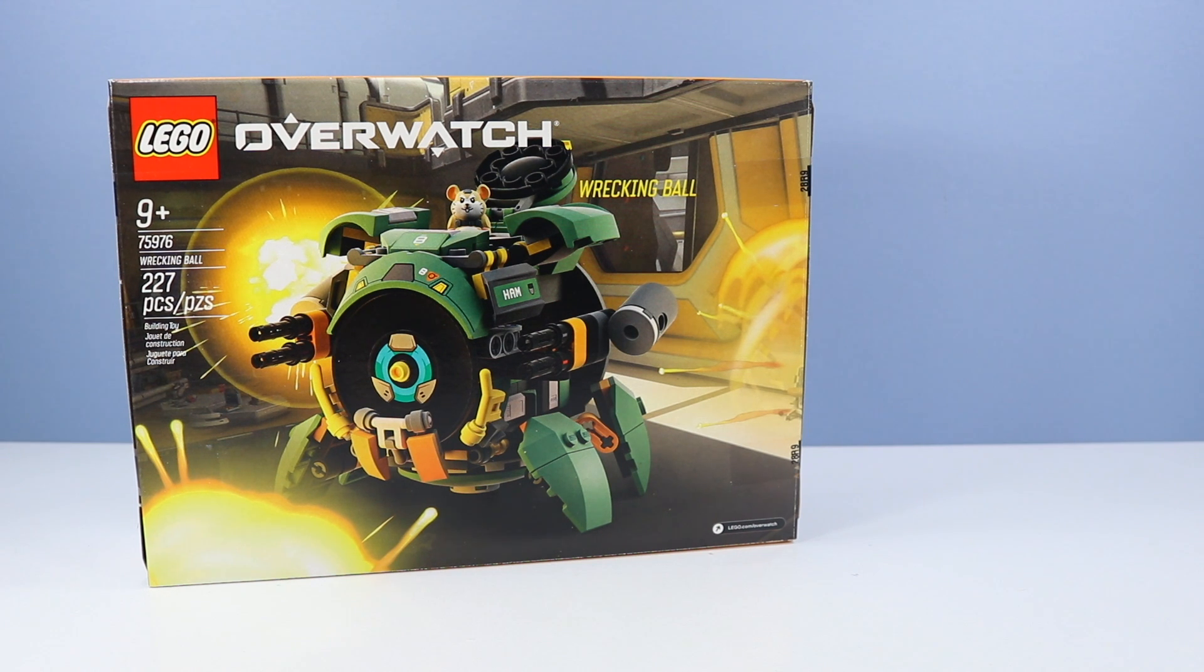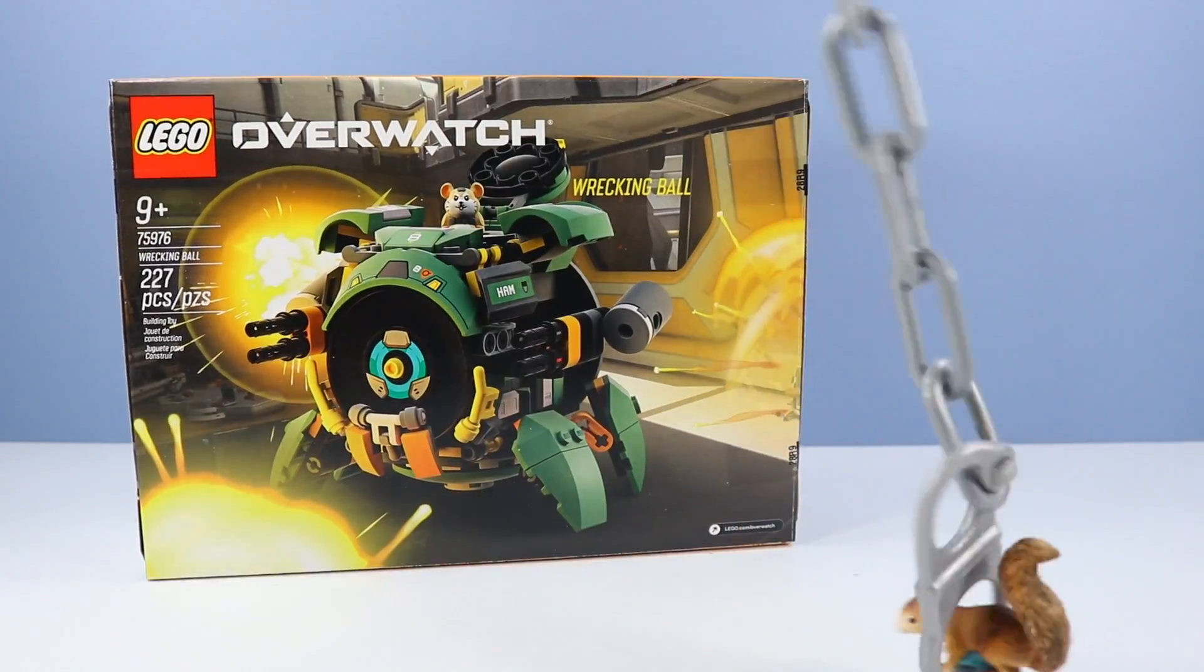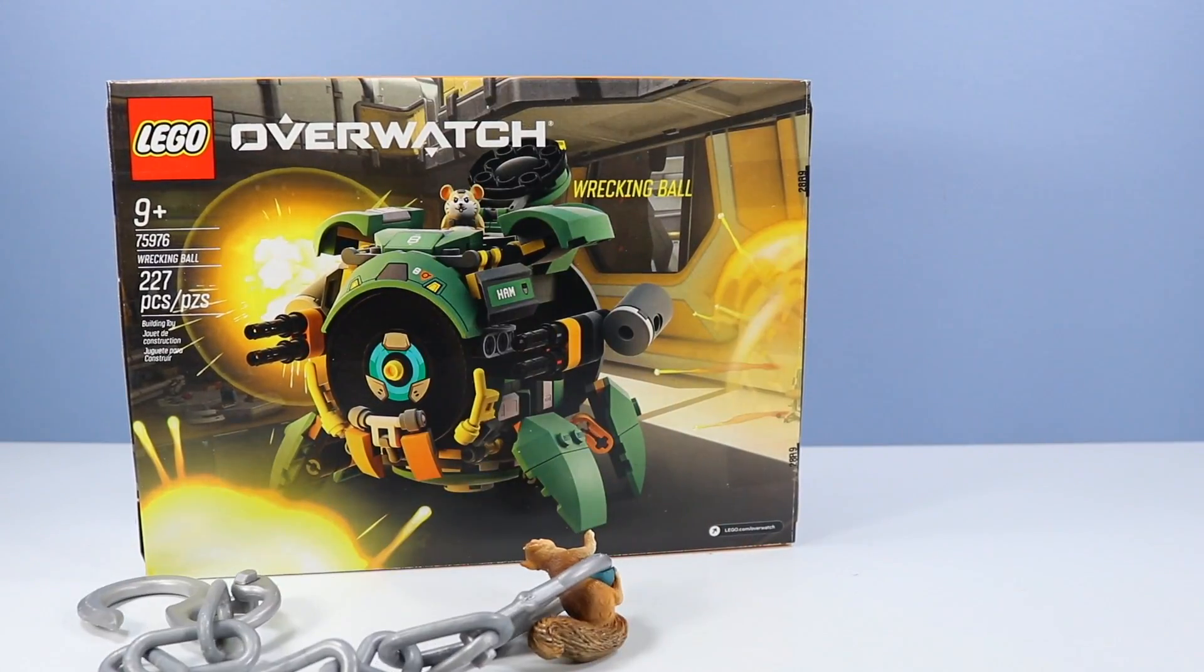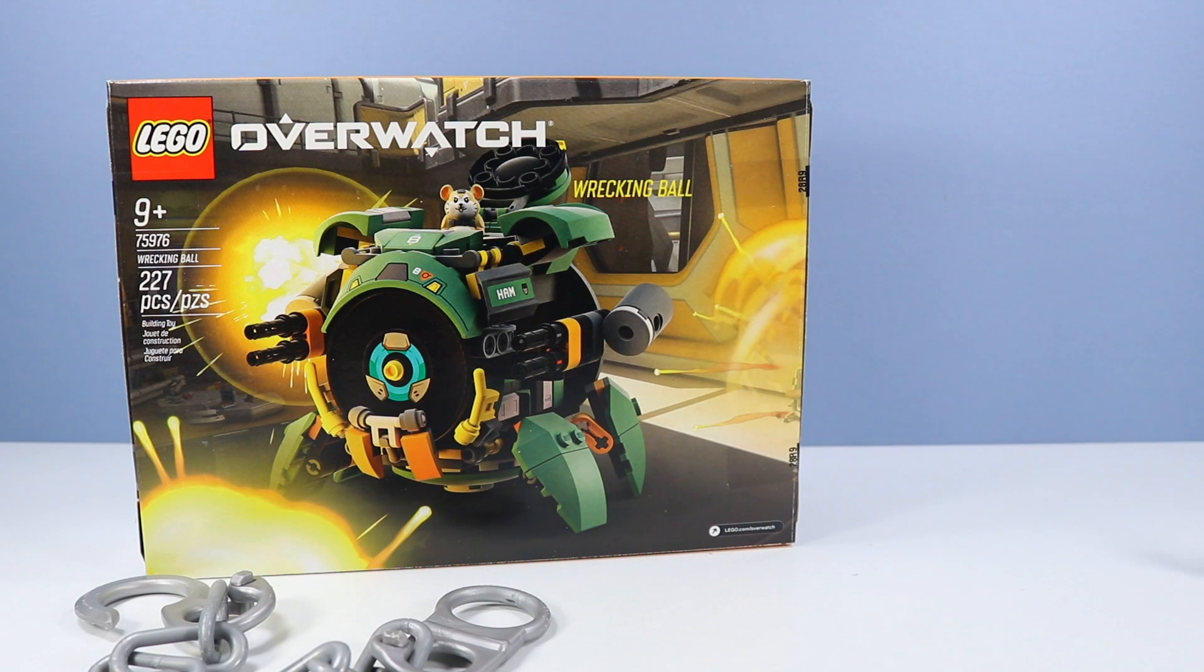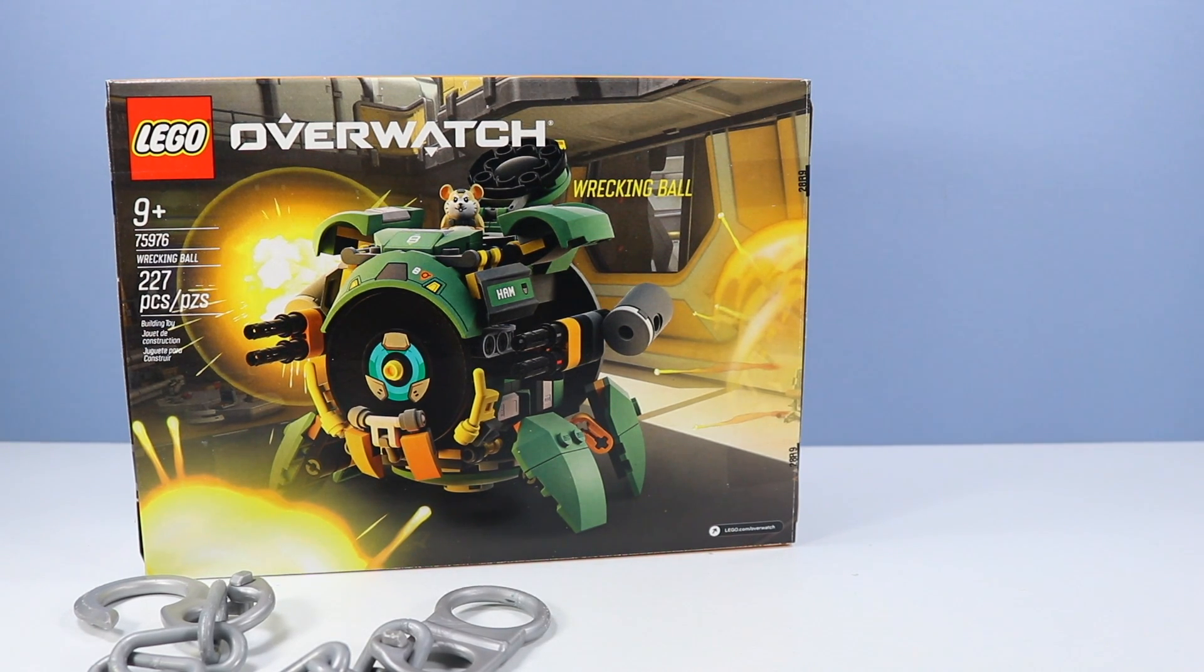On the table we are going back to Lego Overwatch with set number 75976 Wrecking Ball! I came in like a wrecking squirrel! 227 pieces and comes with a Hammond Hamster minifigure which I'm sure all the squirrels will be happy to meet!